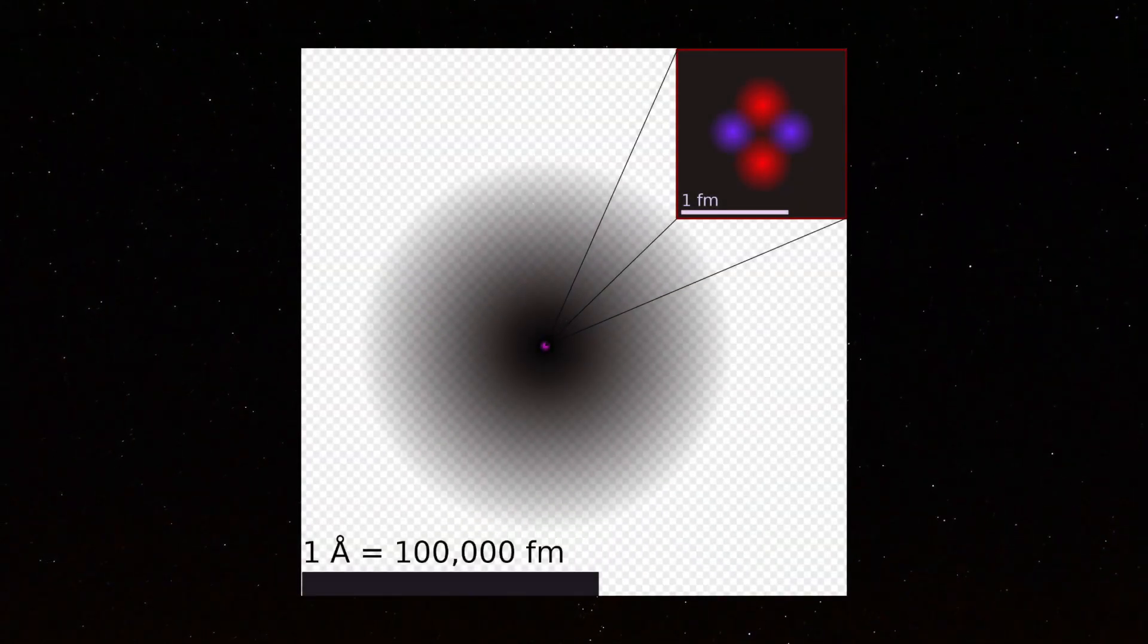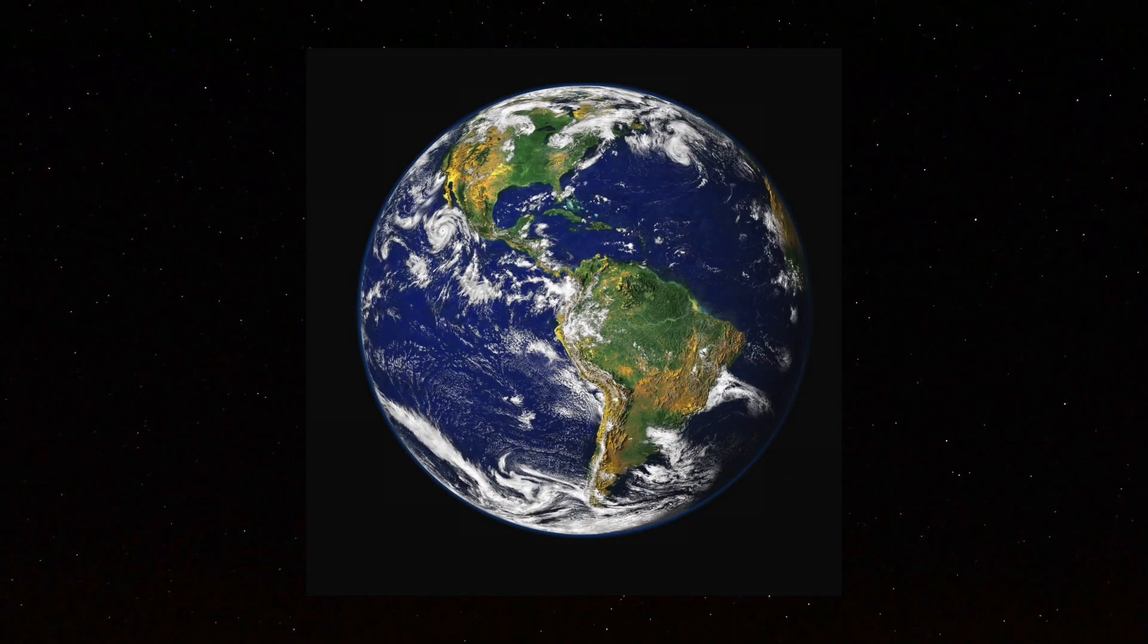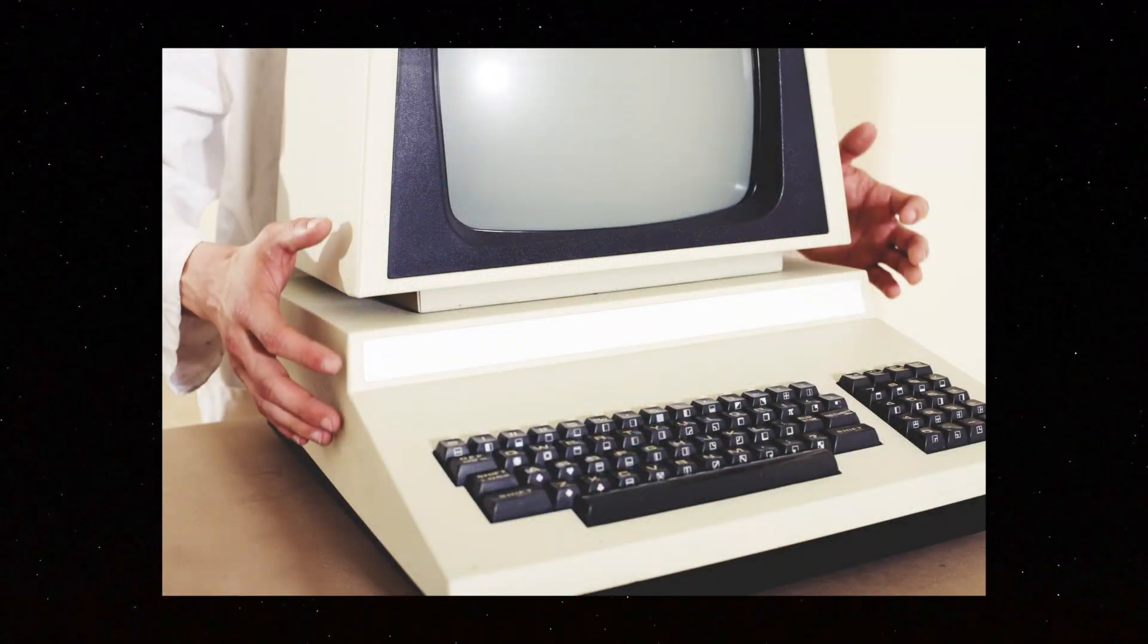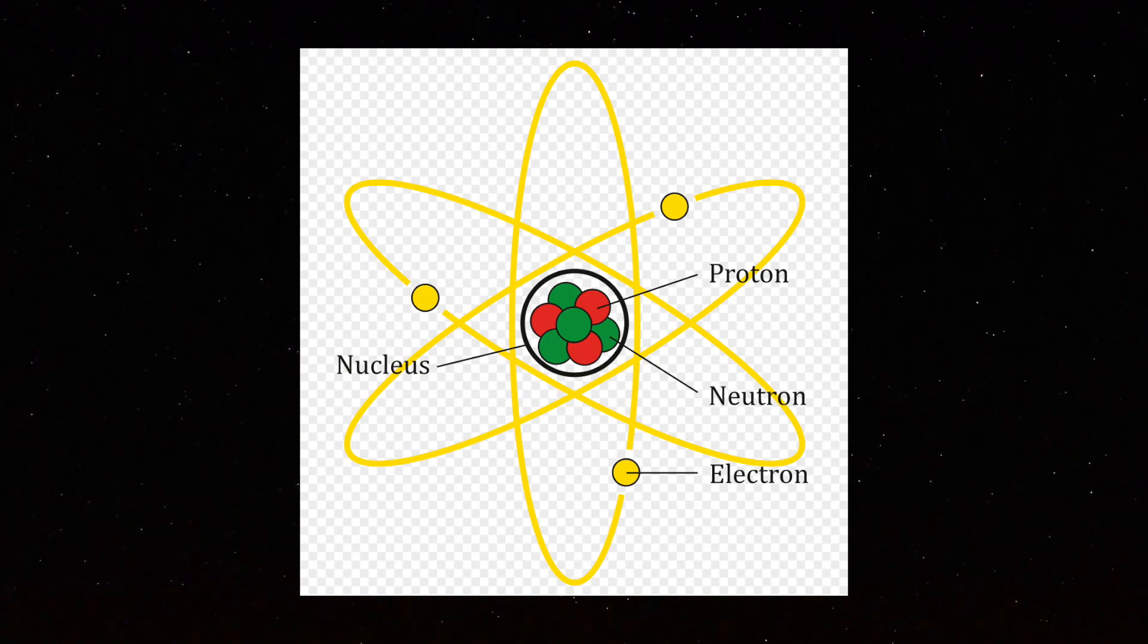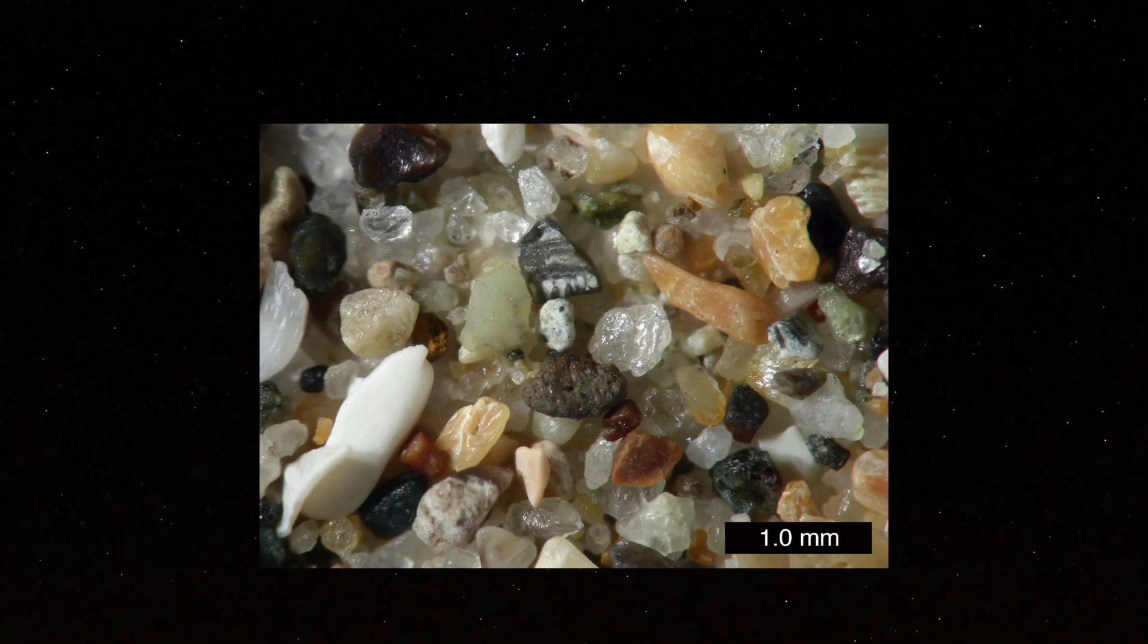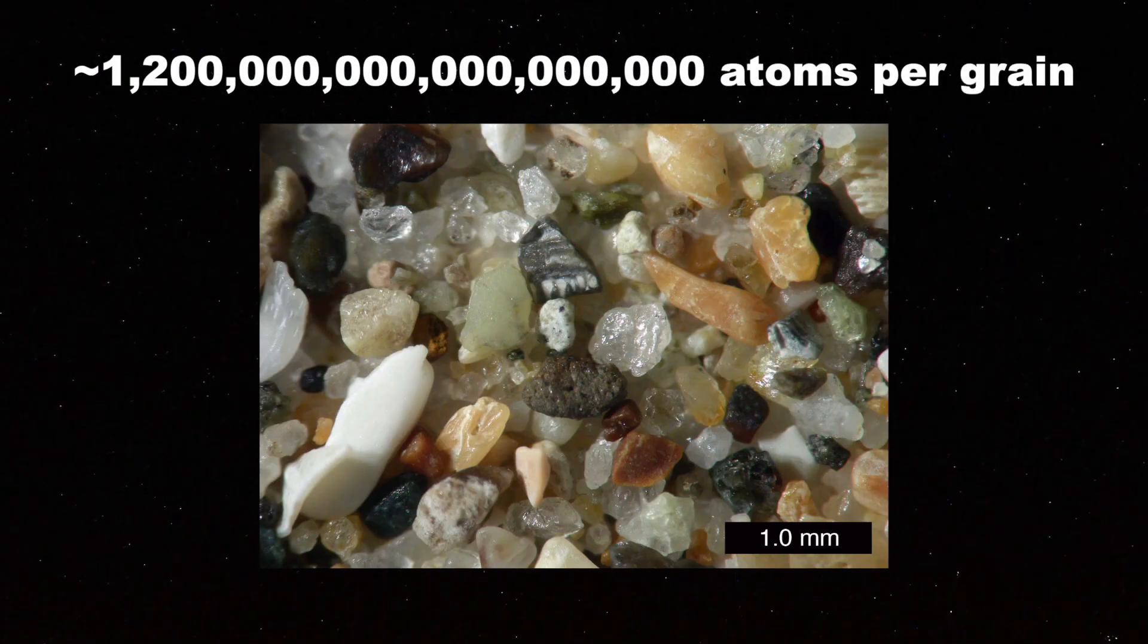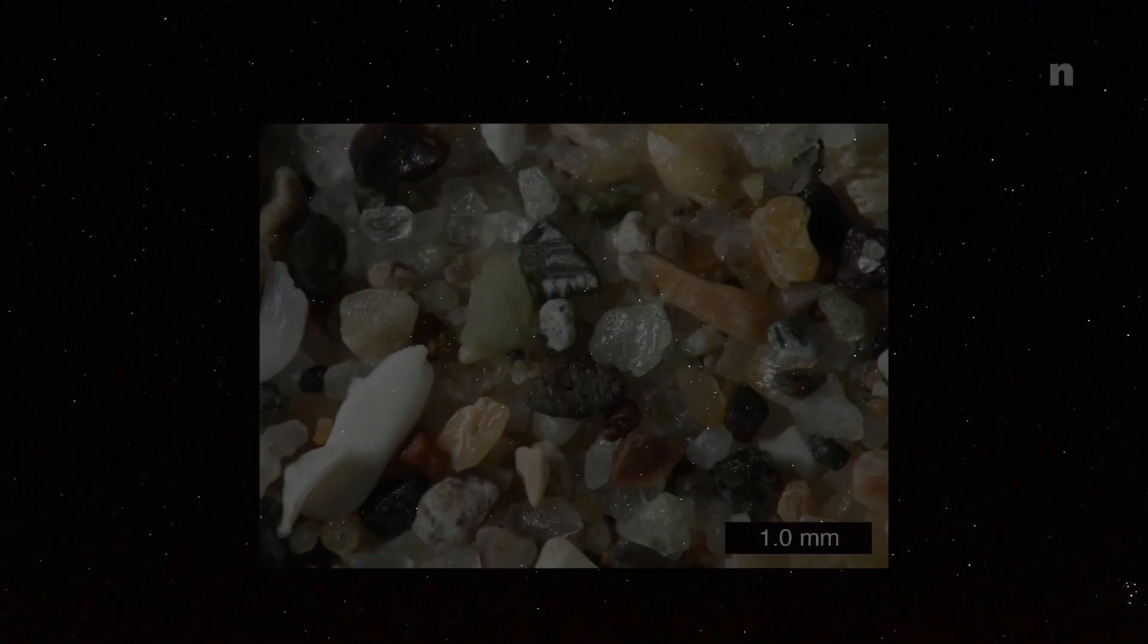At small scales, everything is made of atoms. You, the Earth, even the computer that you're watching us on right now. And atoms are really, really tiny. In just one grain of sand, there's roughly one quintillion, 200 quadrillion atoms. Atoms are way too small for the human mind to even begin to comprehend. But that's not even the smallest things can get.